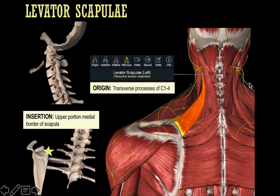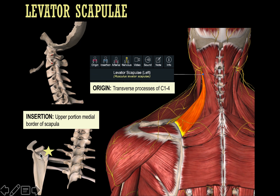The muscle you're going to strain if you carry heavy backpacks or have been studying too long is the levator scapula, which functions to elevate the scapula. Its origin is the transverse processes of C1 to C4, and its insertion is the upper border of the medial scapula. The adjacent images denote in red where the origins are and show the relationship between the scapula and the bony skeleton.